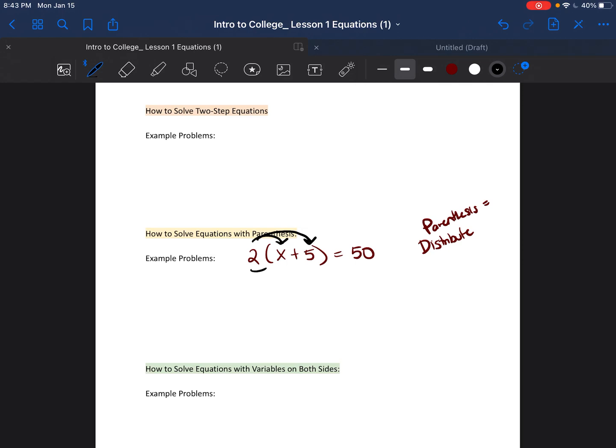If you're doing math at the age 75, go you. So 2 times x is 2x, and then 2 times 5 is positive 10. Bring down the equal sign and bring down the 50. So now that we took care of the parentheses by distributing the 2, we now just have a regular two-step equation.